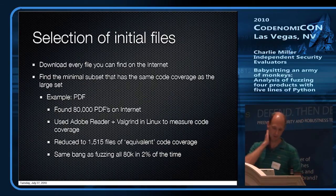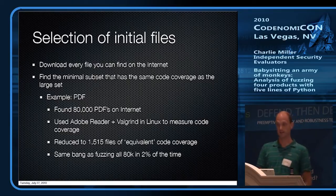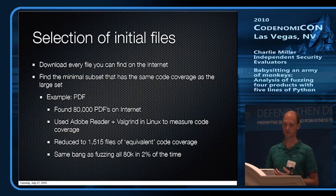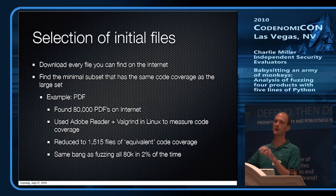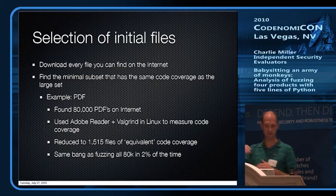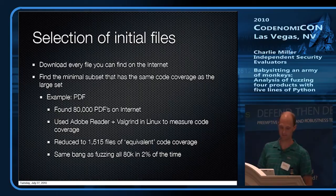How did I choose my files? I just downloaded basically everything I could. For PDF, I downloaded 80,000 PDFs from the internet. I then did code coverage to figure out which files to keep — I didn't want two files that were almost exactly the same with different text. I minimized the set so they still had the same code coverage, bringing it down from 80,000 down to 1,500. The 1,500 still had the same code coverage as the 80,000.